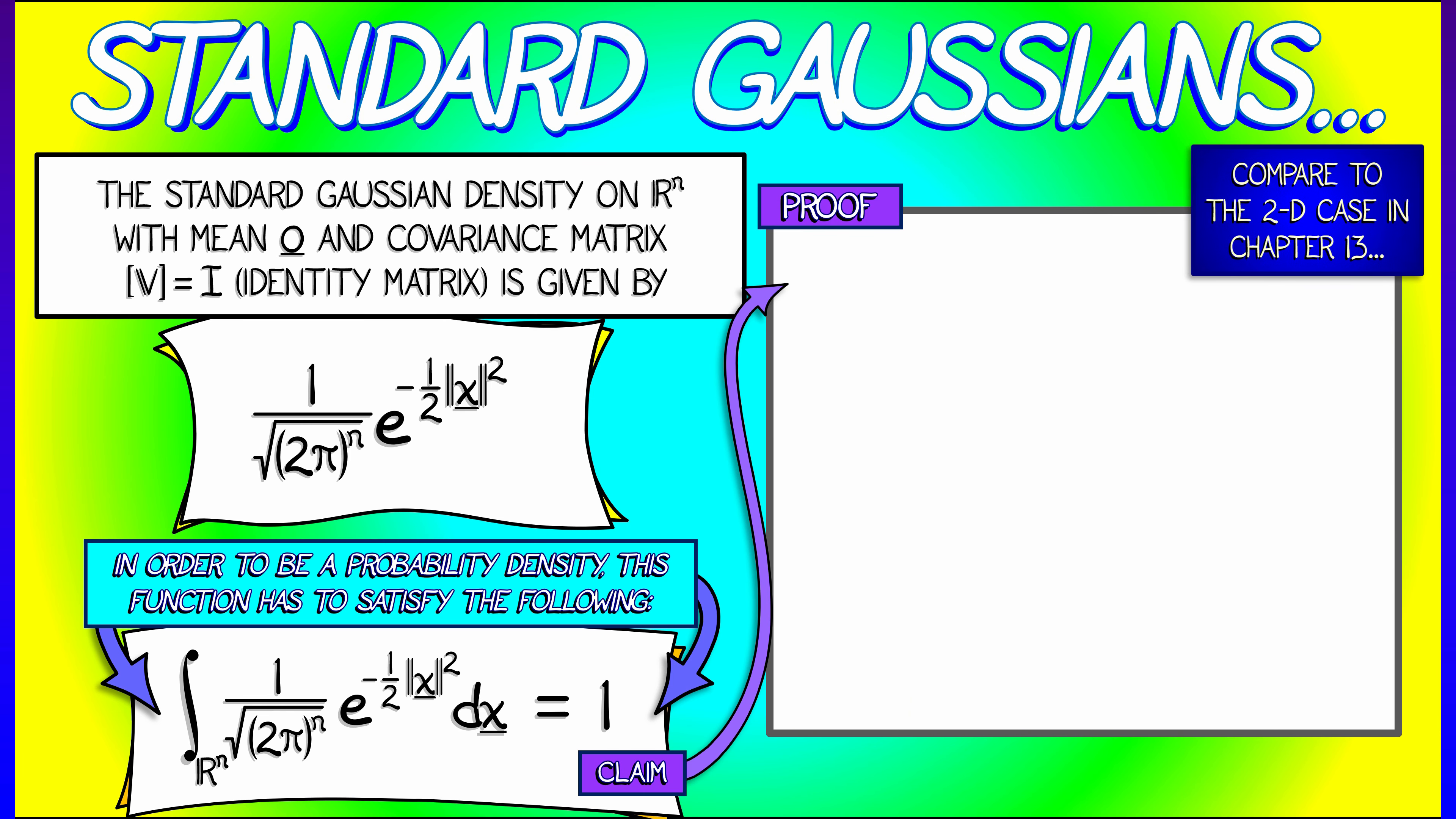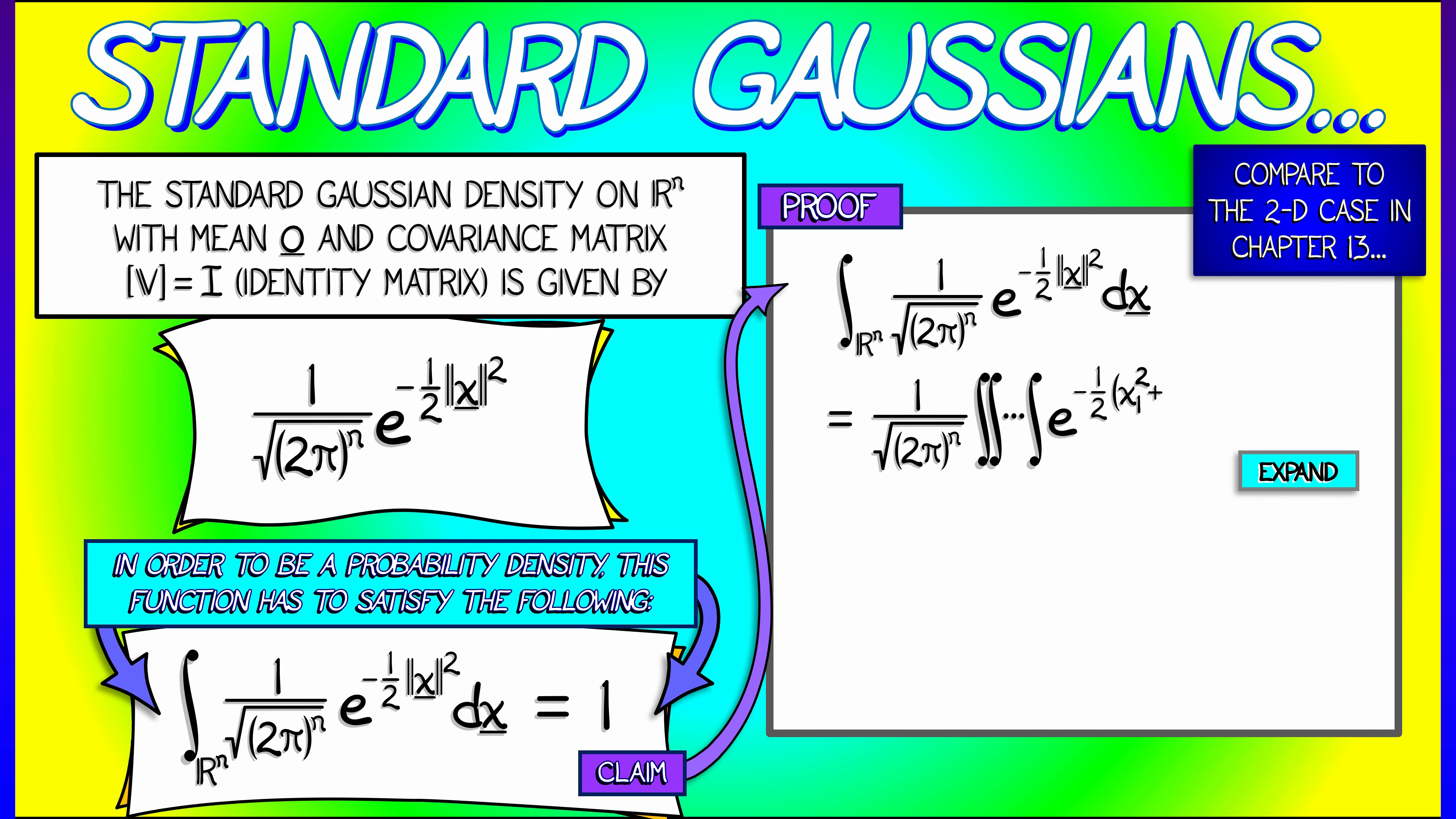It's a simple extension of what we did back in chapter 13. If we integrate this over all of R^n, I can pull out that normalization constant, and I'm left with the integral of e to the minus one half x dot x. Now expanding that out, that exponent is minus one half quantity x1 squared plus x2 squared all the way up through plus xn squared. And I'm integrating with respect to dx1, dx2 up through dxn.